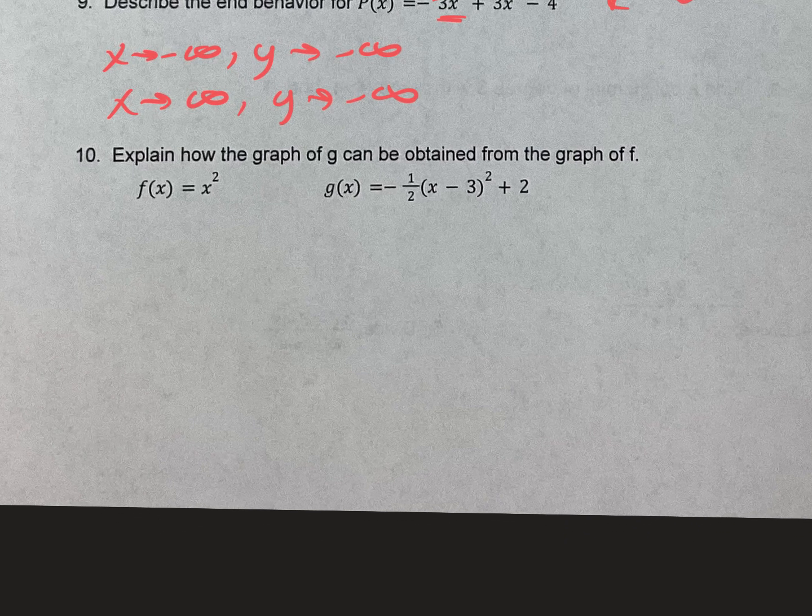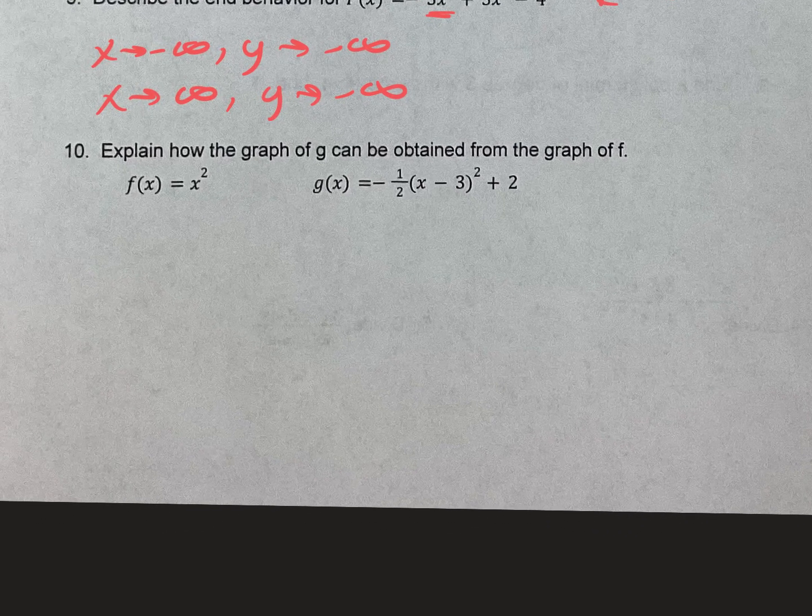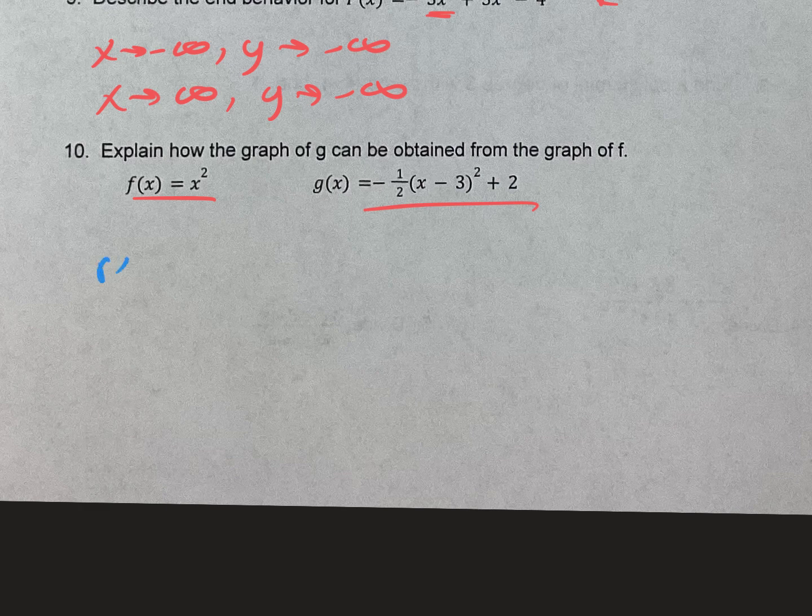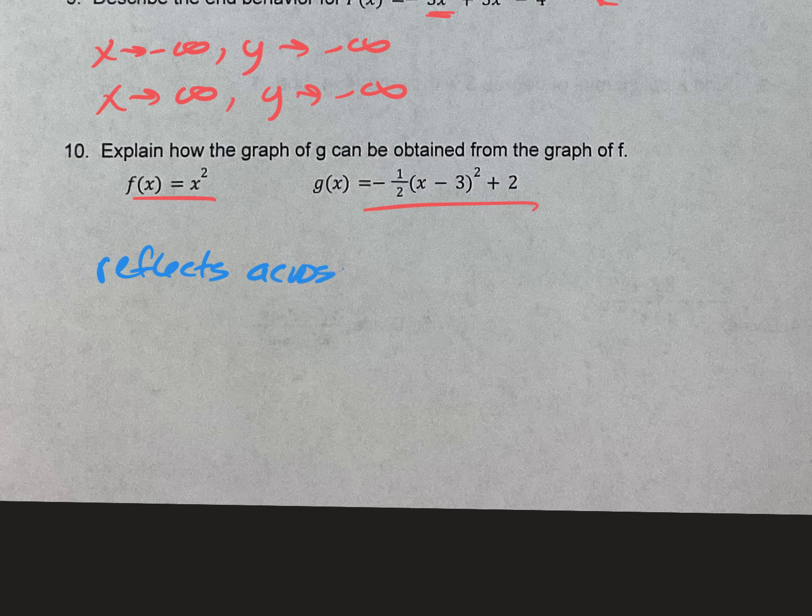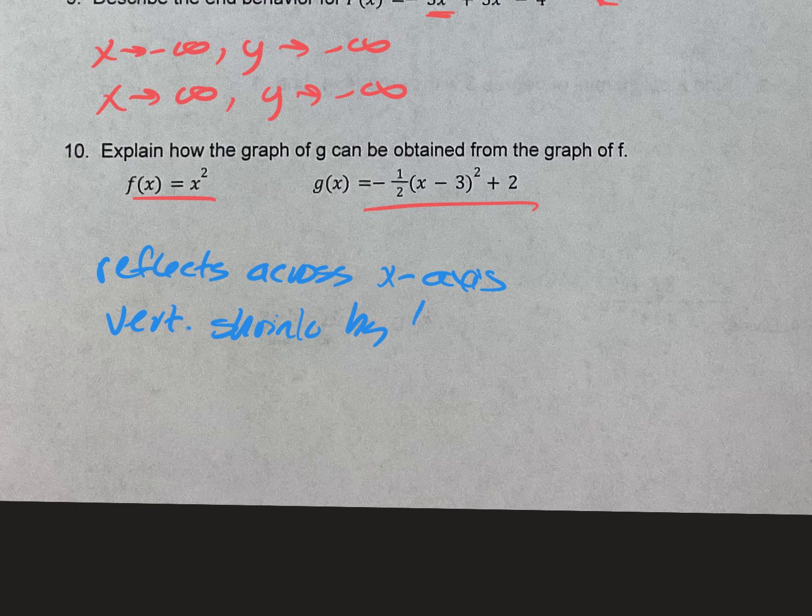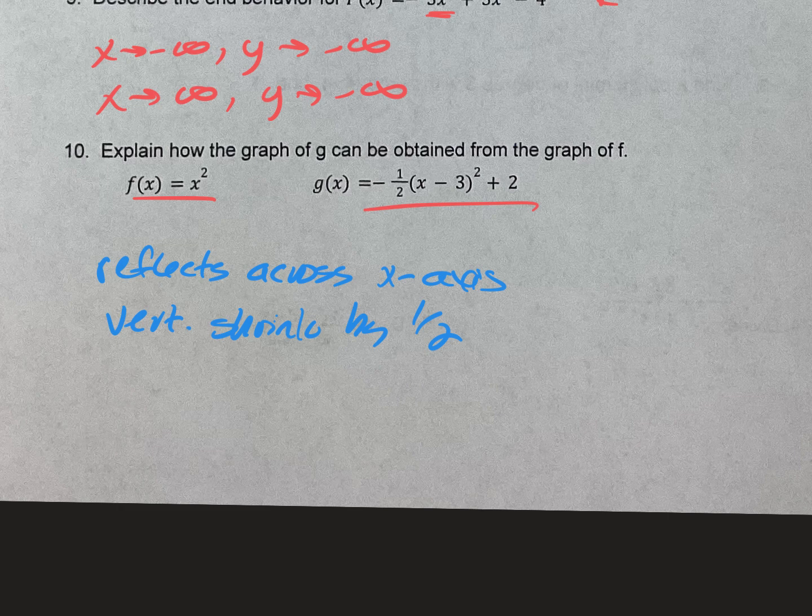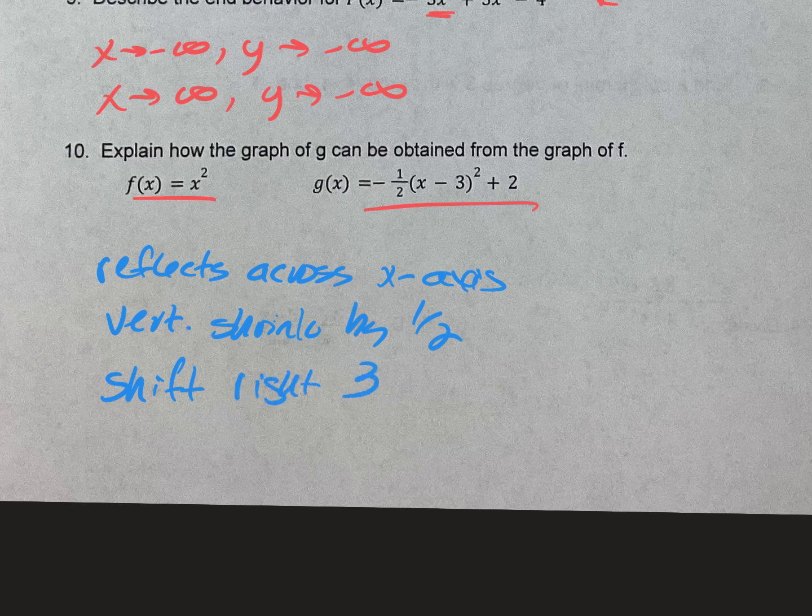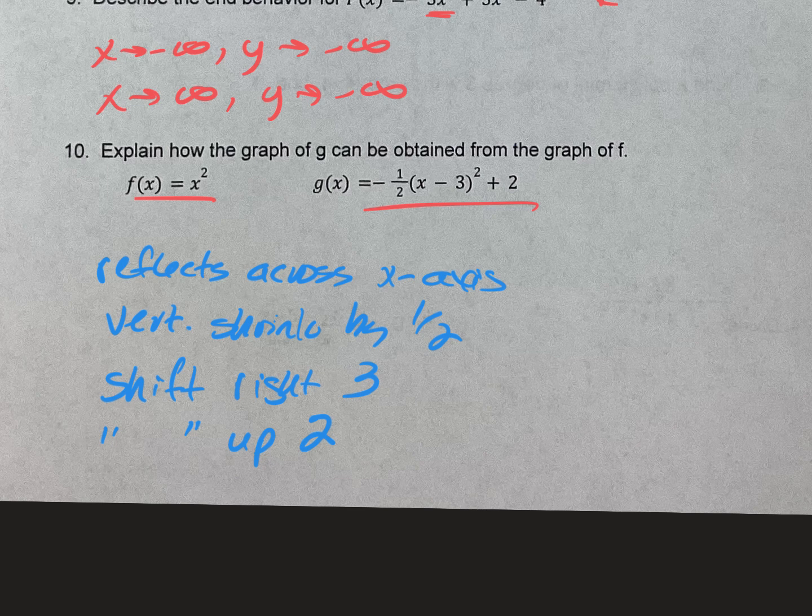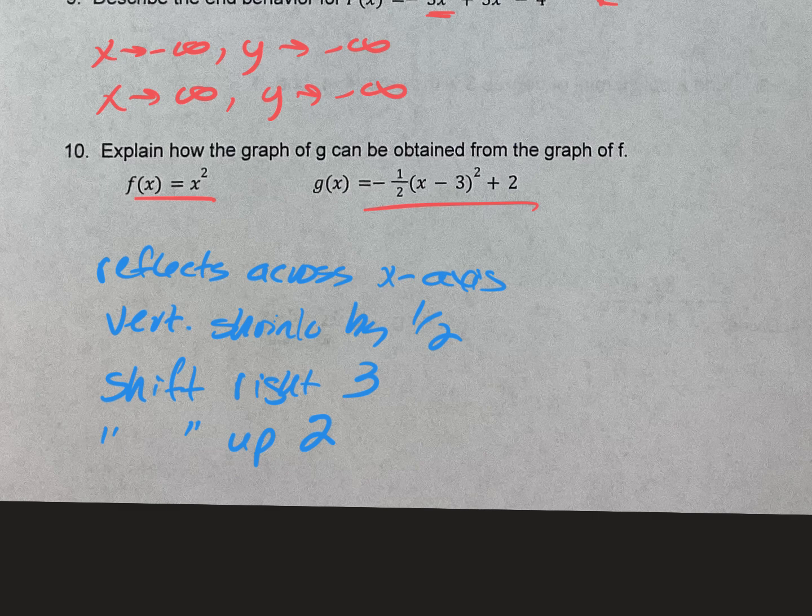Number 10, the last one. Explain how the graph of g, this graph, can be obtained from that one. That's just list all the transformations that happen here. So first thing, the negative in the front, it's going to reflect across the x-axis. The 1 half is a vertical shrink by 1 half. The x minus 3 is a shift. Remember, opposite of what you think inside. Shift right 3. And the plus 2 on the outside is a shift up. Outside is exactly what you think. Up 2. And there you go, there's all the shifts. So hopefully not too bad. Use this video, make 100 again. You're off to a great start. Stay off to a good start. I'll see you tomorrow. Bye.